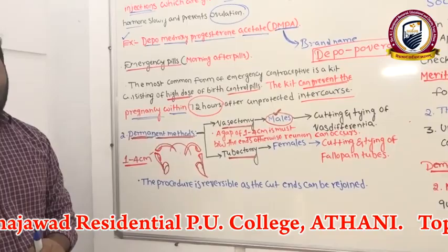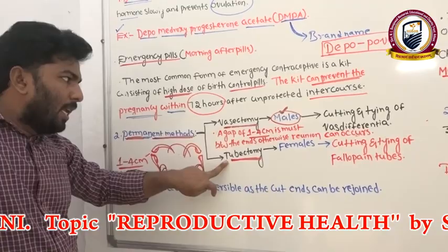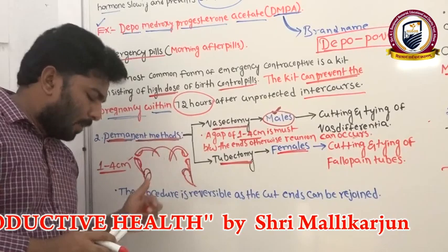The gap of one to four centimeters between cut ends must be maintained; otherwise there is a chance the ends may rejoin. Next is tubectomy, similar to vasectomy but performed specifically in females.